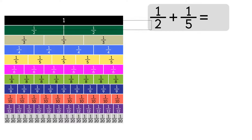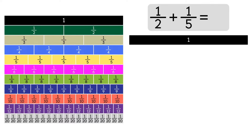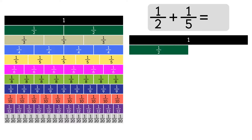We'll put the 1 whole as a benchmark to see if our sum is less than 1 or greater than 1. Now let's put the 1 half strip and the 1 fifth strip next to each other.